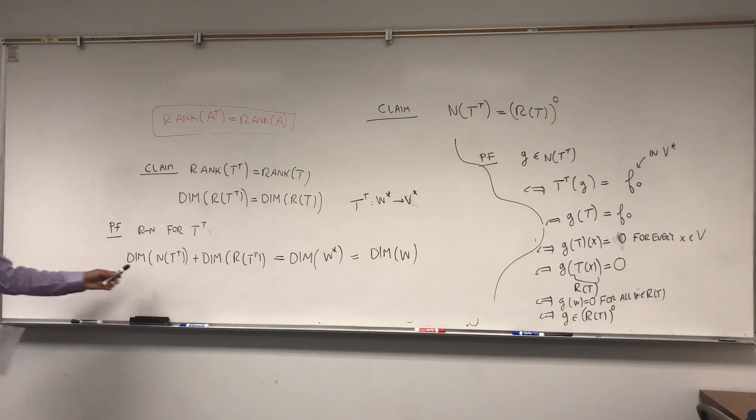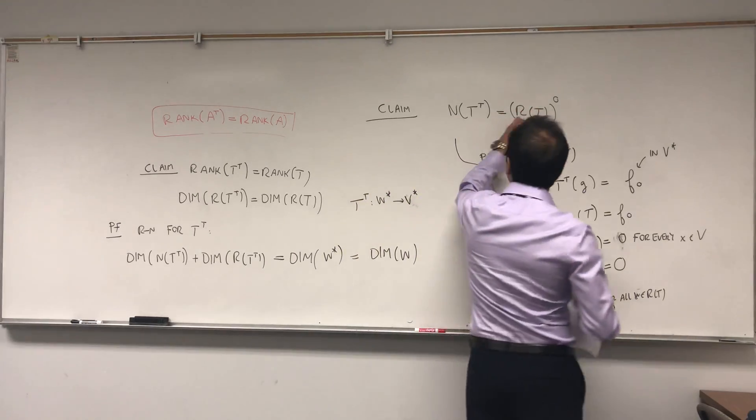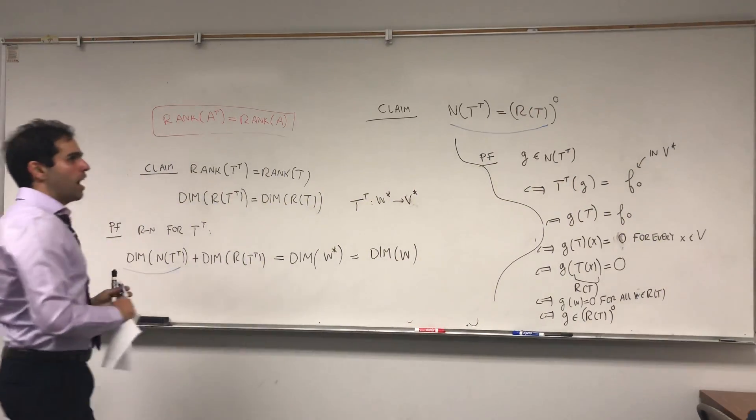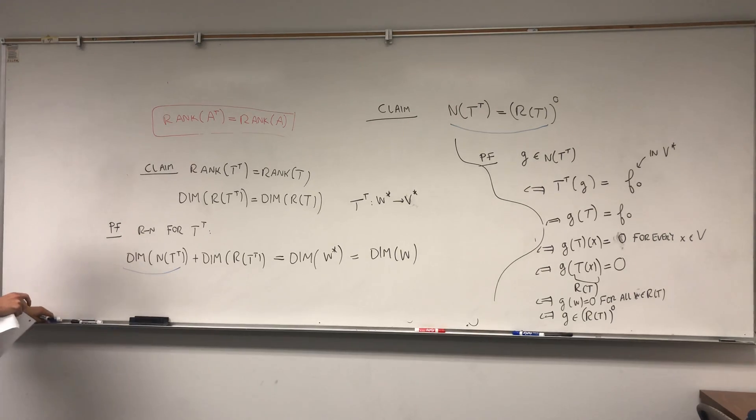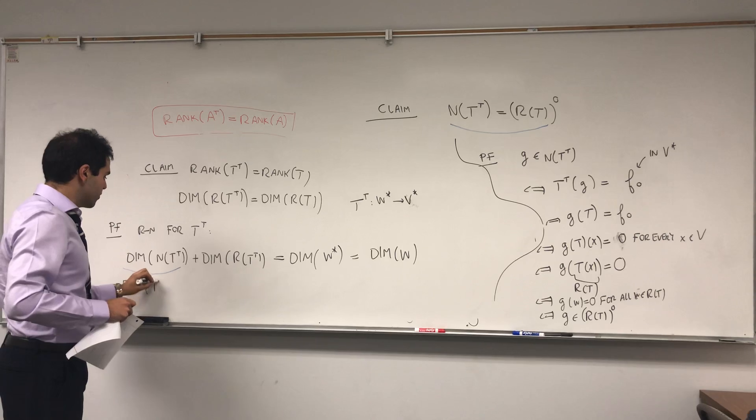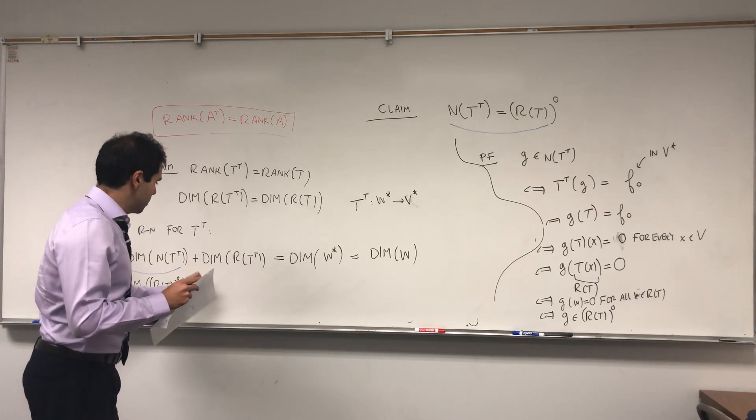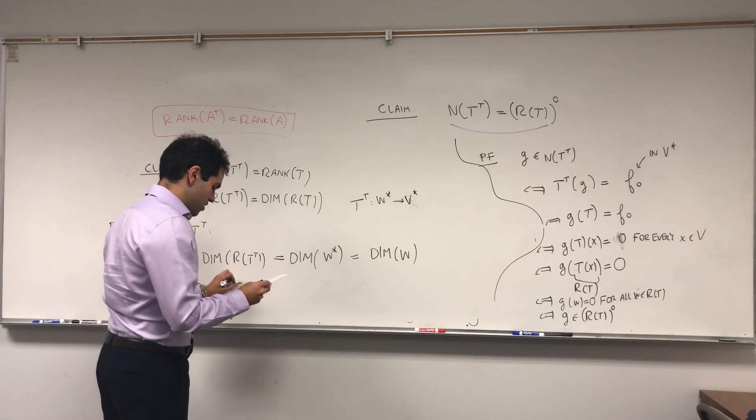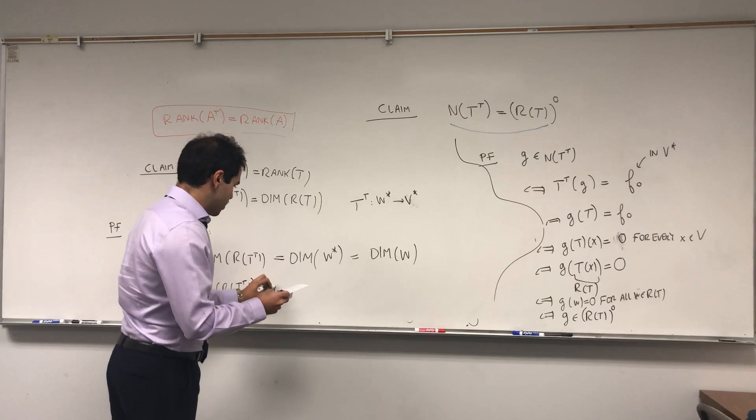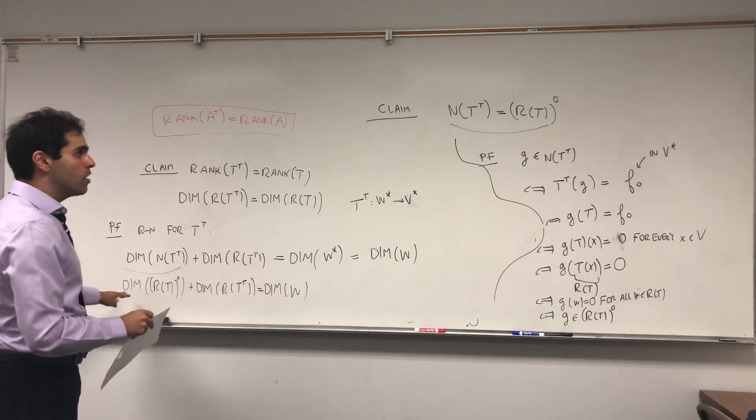On the other hand, why did I even bother with this? Because we have the following identity. The null space of T transpose, it's the annihilator of the range. So, we get dimension of the annihilator plus the dimension of the range of T transpose equals to the dimension of W.